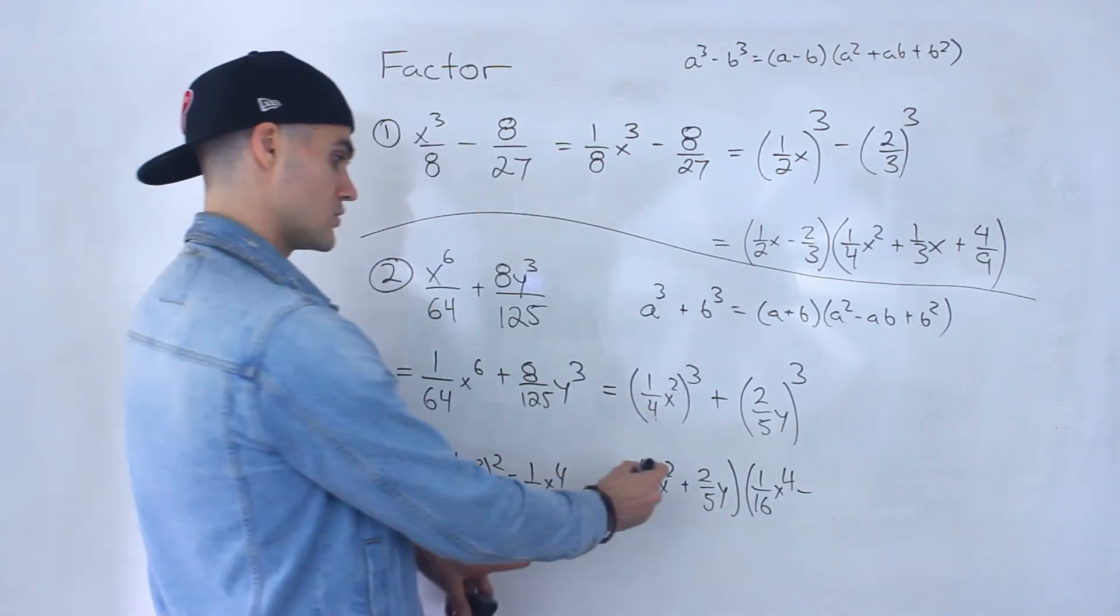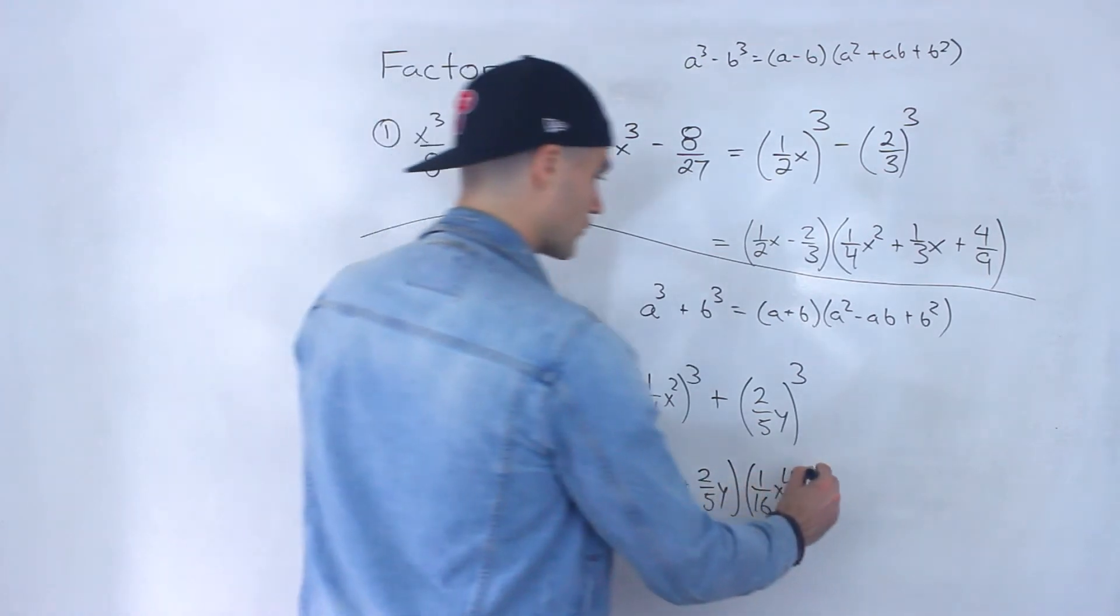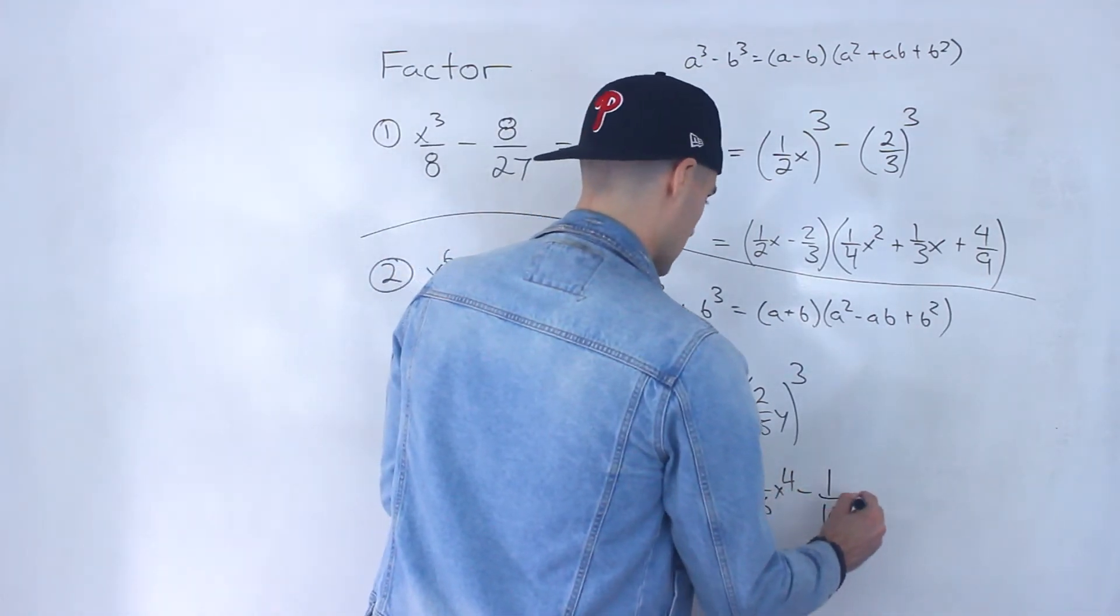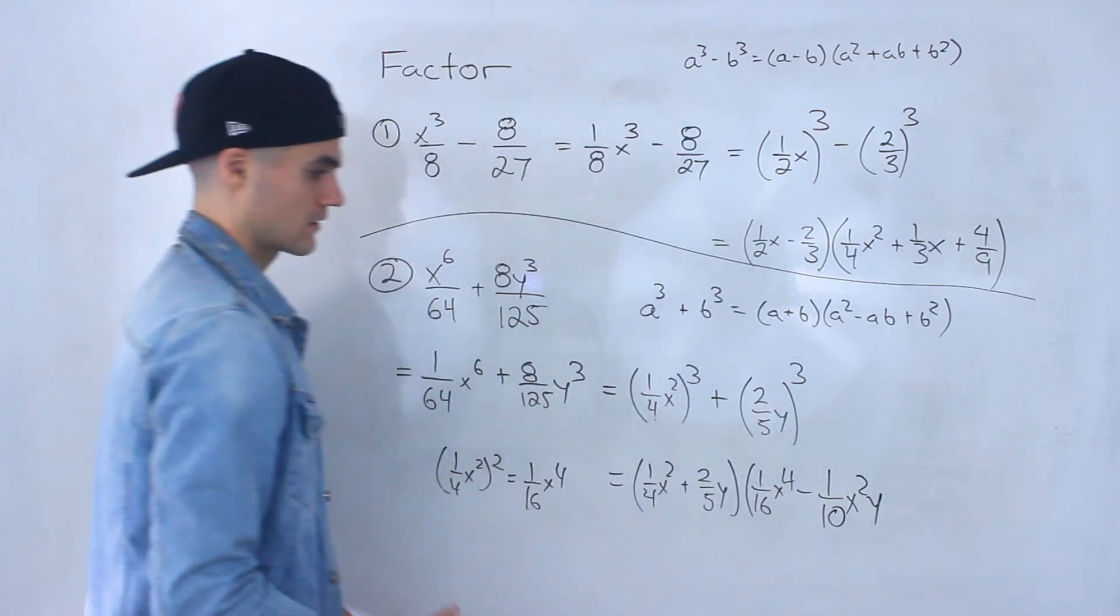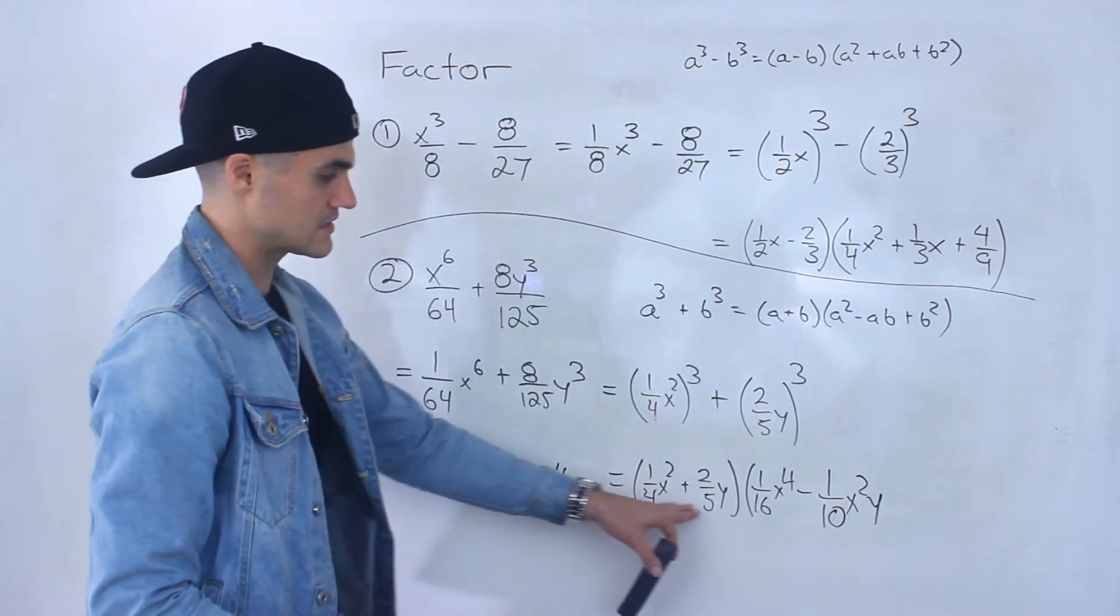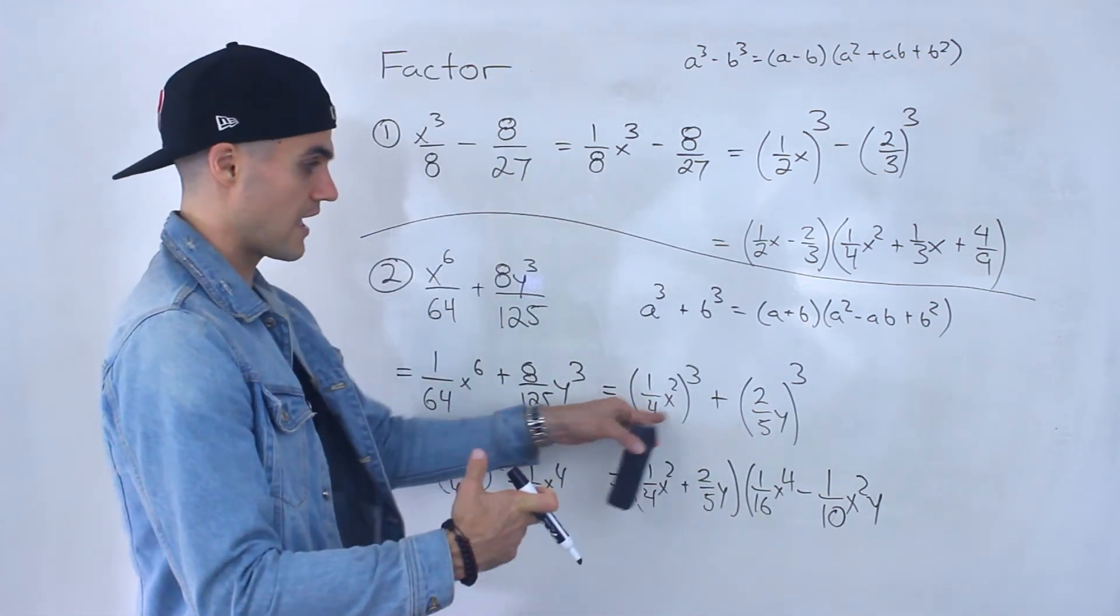That would be 2 over 20, which would be 1 over 10x squared y. Like that. Right? If I take this and this, multiply together, the a and the b,